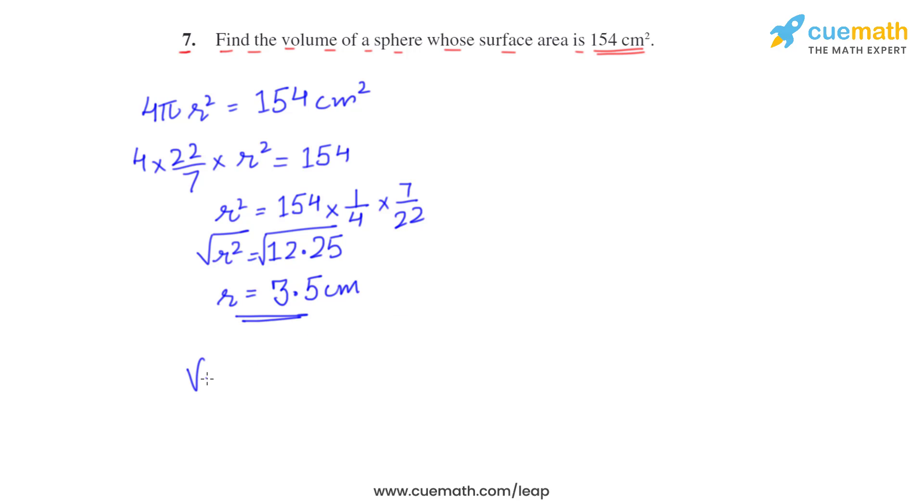Once we have got r, now we have to find the volume. So volume formula is 4 by 3 πr³, that is 4 by 3 into 22 by 7 into 3.5 whole cube. So this comes out to be 539 by 3 cubic centimeters.